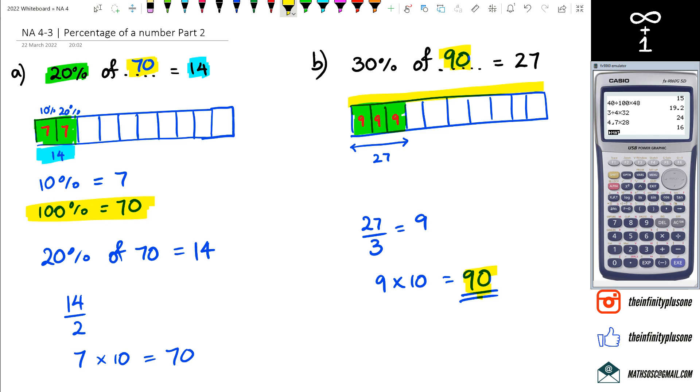But yeah, with these kind of questions what I say is try and figure out what 10% is or figure out what 1% is. And then if you figure out what 1% is then you can multiply by 100, but if you figure out 10% then you multiply it by 10 to get to 100%. But anyway guys, that is basically it for this video. As always, thank you for watching.